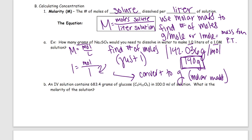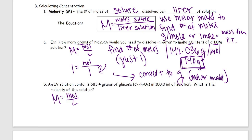Example B: An IV solution contains 683.4 grams of glucose in 100 milliliters of solution. What is the molarity of the solution? Our equation is still the same: molarity equals moles per liter. We're solving for M. We don't have the number of moles, but we can get moles by converting from grams. And we don't have liters, but we can convert 100 milliliters to liters.